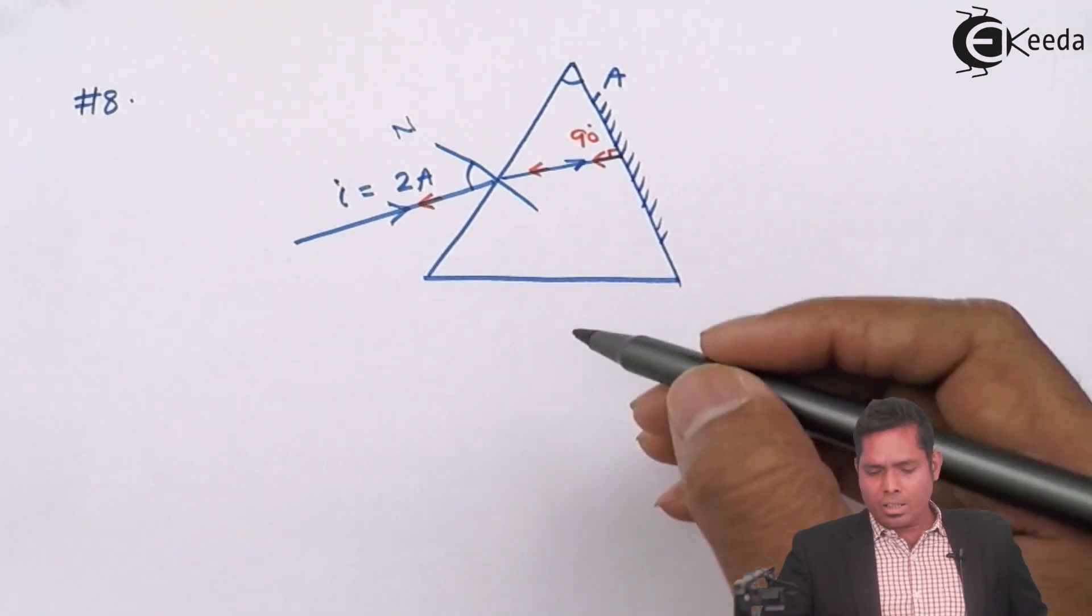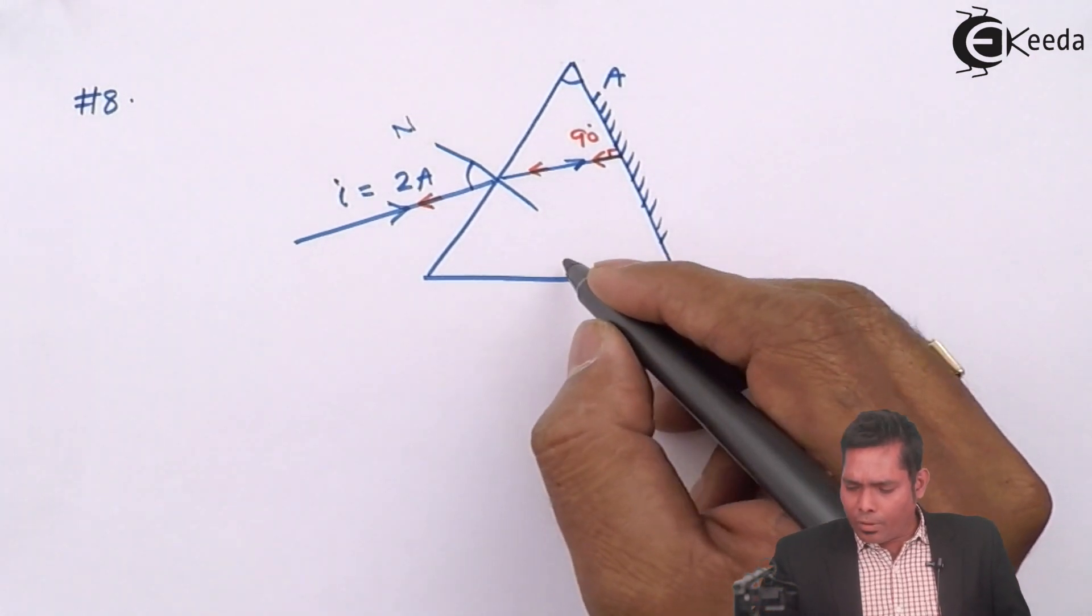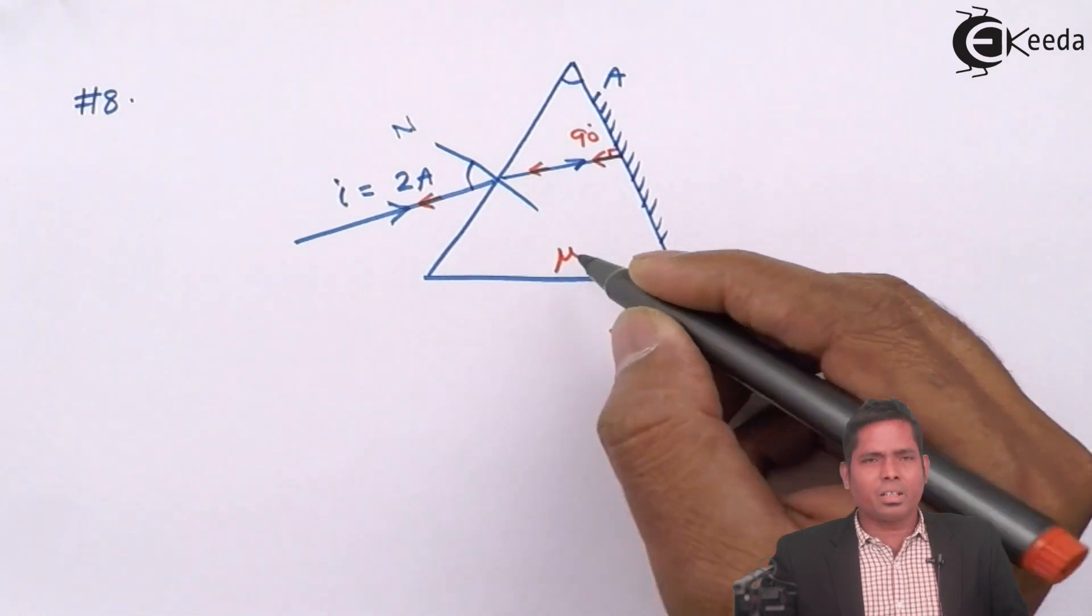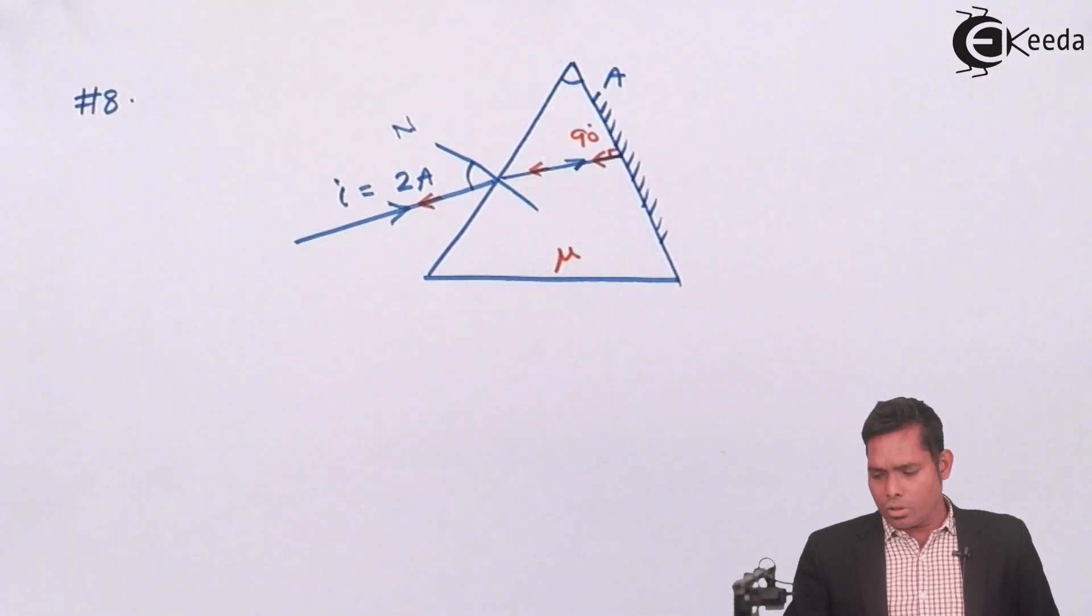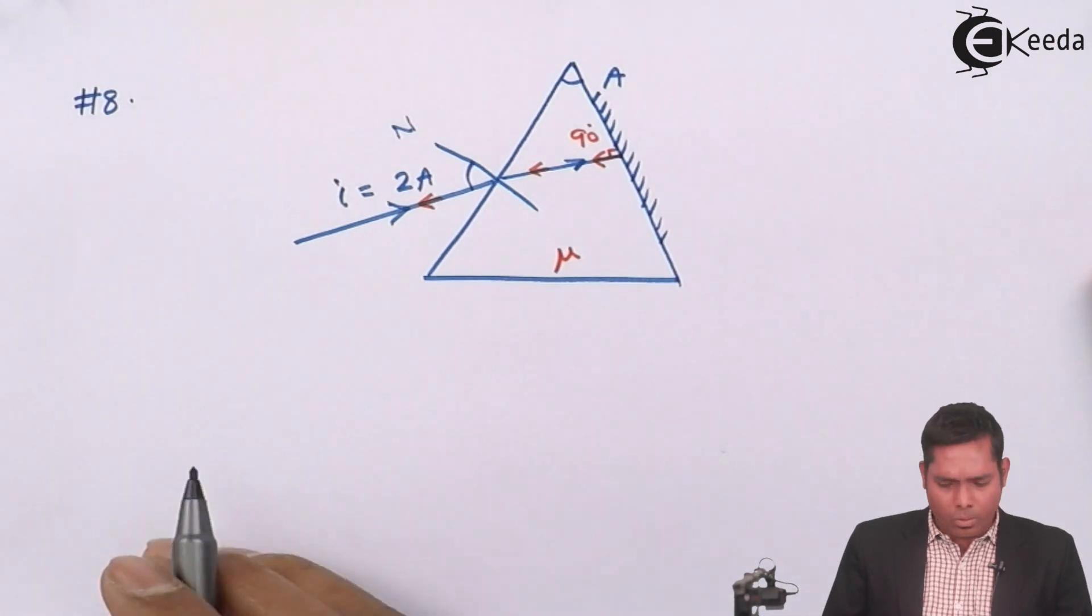It says that it follows the same path. Then, in this case, you are asked to find the refractive index of the material of this prism. This is the question.